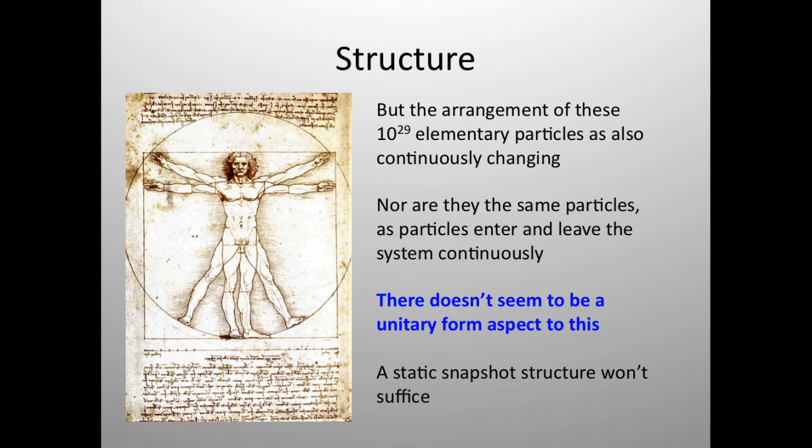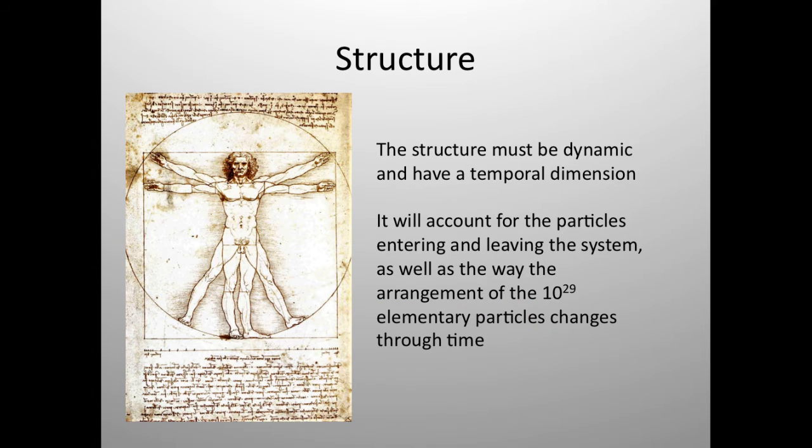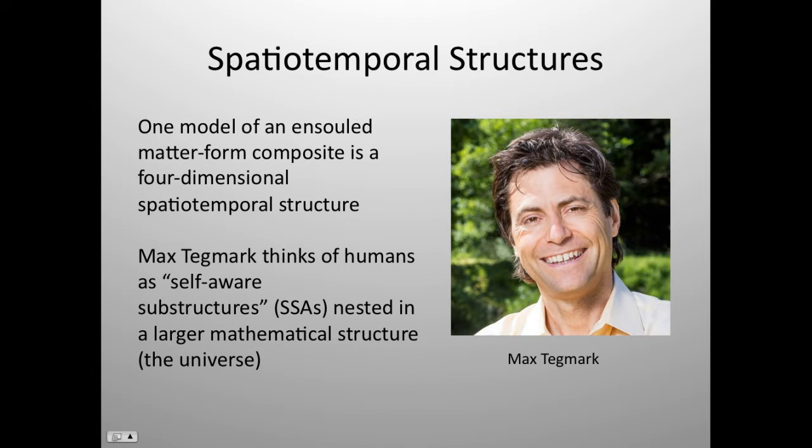There doesn't seem to be any unitary form to all of this. So a static snapshot structure is not going to be sufficient. So the structure, it has to be dynamic, and we have to incorporate a temporal dimension, for sure. So the structure is going to have to account for the particles that are entering and leaving the system, as well as the way that they are arranged in the soul as they are there, the arrangement of these 10 to the 29th elementary particles across time. So if we want this to be a dynamic structure, but still one single structure that we're talking about as a unitary soul, one way that we could look at this matter-form composite is as a kind of four-dimensional spatiotemporal structure.